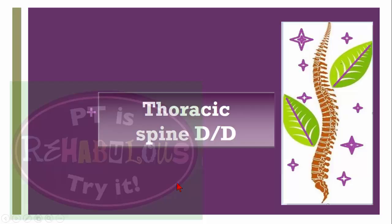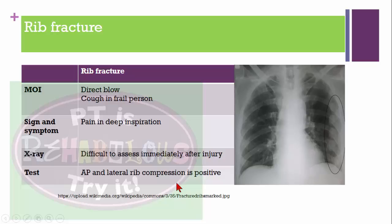For thoracic spine differential diagnosis, first is rib fracture, which may be due to a direct blow or coughing in a frail person. Signs and symptoms include pain with deep inspiration. X-ray is difficult to assess immediately after injury. The test used is the anteroposterior and lateral rib compression test, which will be positive.